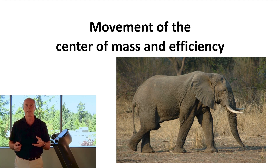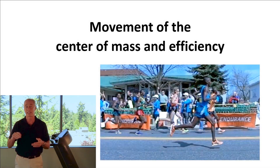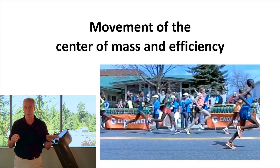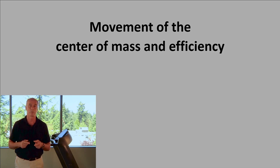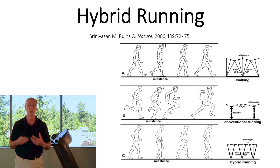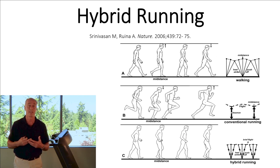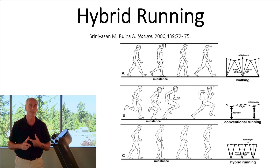When it comes to running, the most efficient progression of the center of mass involves avoiding excessive displacement but not flattening it completely. Researchers from Cornell created a computerized model where they put in every possible determinant and evaluated the metabolic cost.